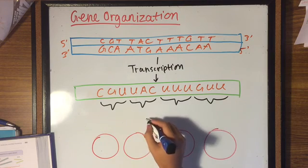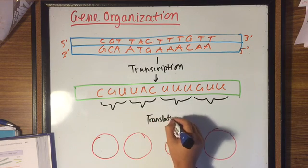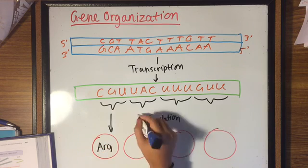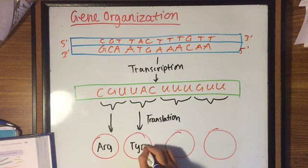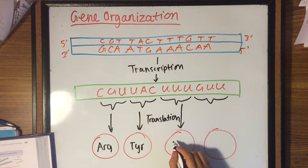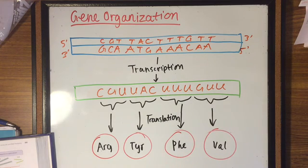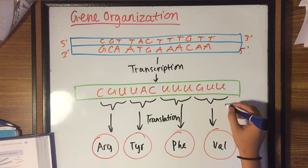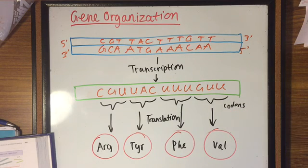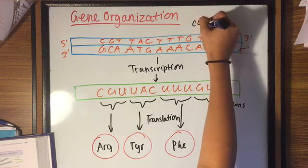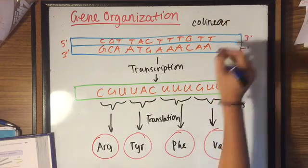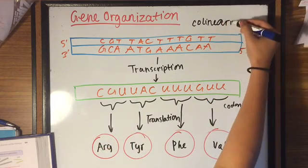Each codon is translated into their specific proteins. Crick proposed that the genes and proteins are collinear, which means that the number of nucleotides equals the number of amino acids. This is true for viruses and bacteria, but not all genes are continuous, as we will find out.